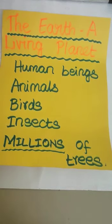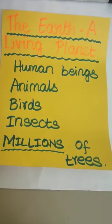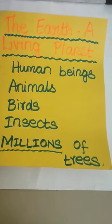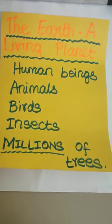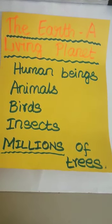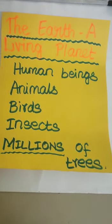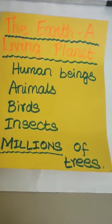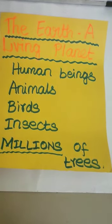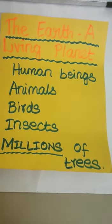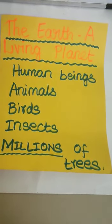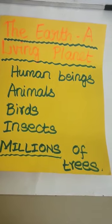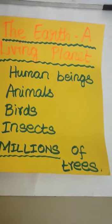The Earth is made up of land, water, and air. Nearly 70% of the Earth is covered with water and 30% is land. Due to the presence of water in such large quantity, we call it the blue planet.